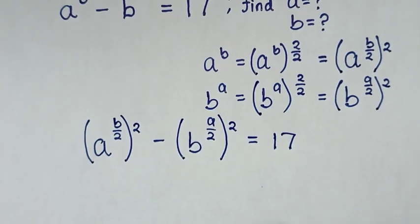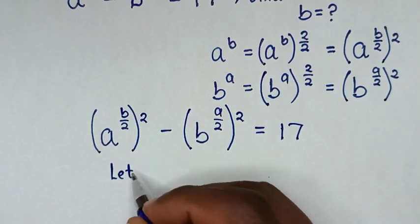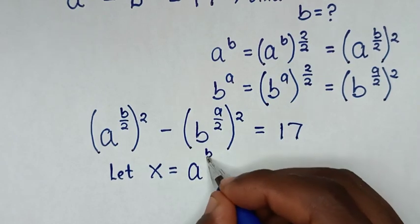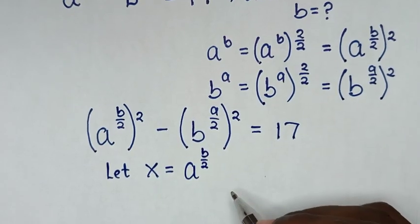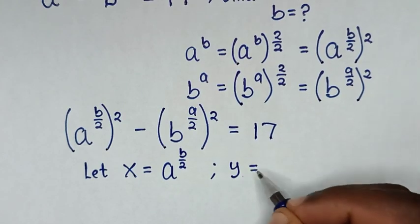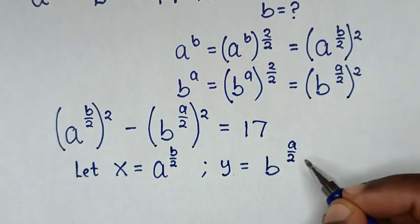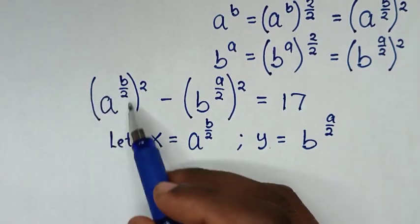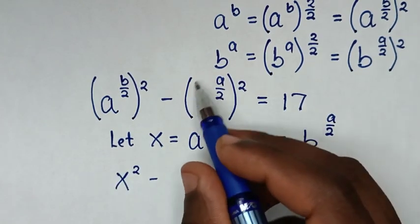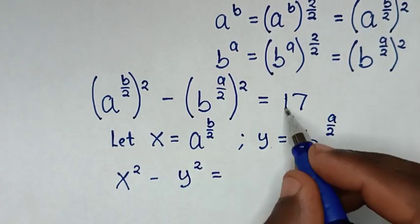In the next step, we let x equal a power of b over 2, and we let y equal b power of a over 2. So the equation becomes x squared minus y squared is equal to 17.